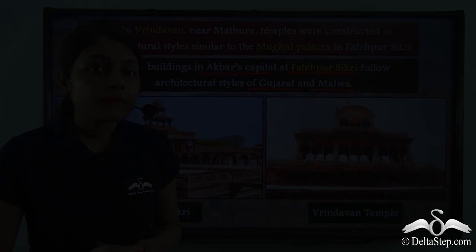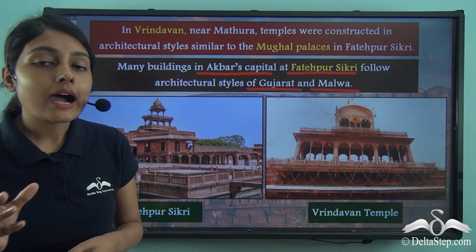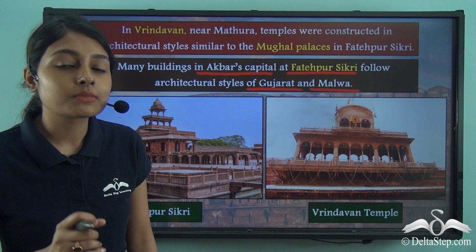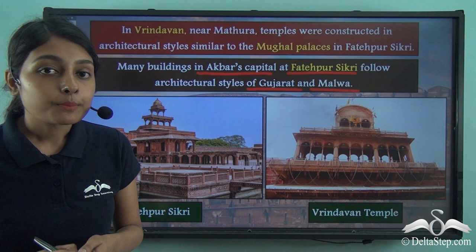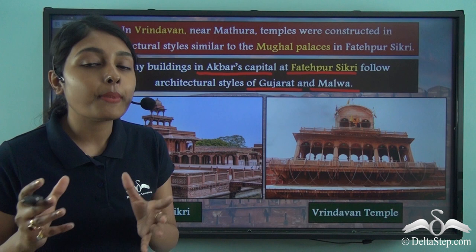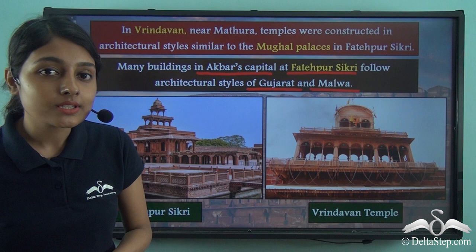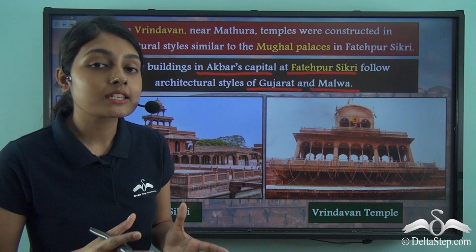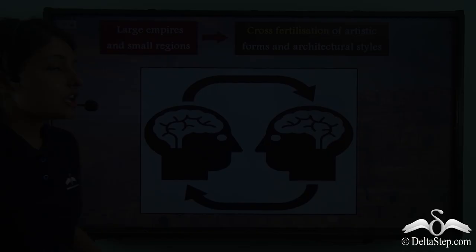While discussing this, it is important to understand the religious dimension as well. There wasn't a Hindu-Muslim divide during this period — this is true secularism in spirit. The temples of Vrindavan are very holy and pious to Hindus, yet despite this, they were influenced by the Mughal palaces made by Muslim emperors. You can see how the spirit of secularism was at play during this period.